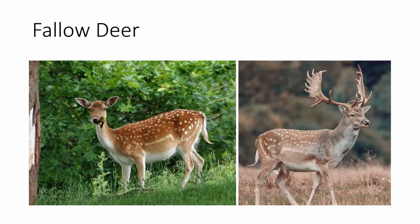The fallow deer is native to Europe and the Middle East, and has been introduced in North America all over the place, including Texas, California, BC, Kentucky, Nebraska, and Alabama. It has a long tail, which is black on the back and white on the underside, with a black semicircle around the rump. The male's antlers are also diagnostic — they almost look like moose antlers, but they're not. During the summer these fallow deer will always have spots, but they lose them during the winter, so you can't rely on those for identification.